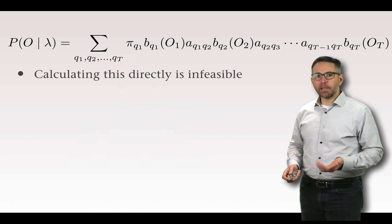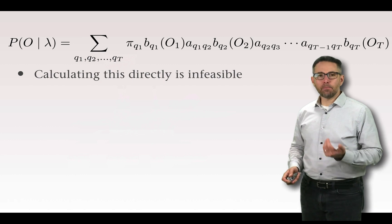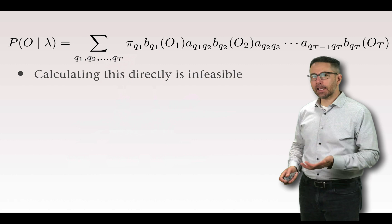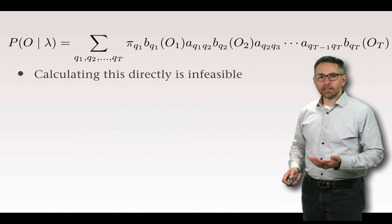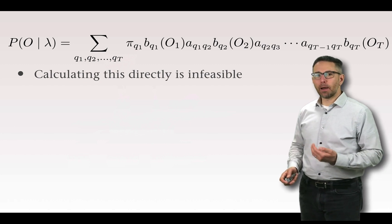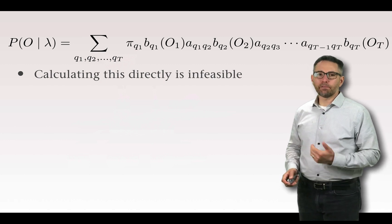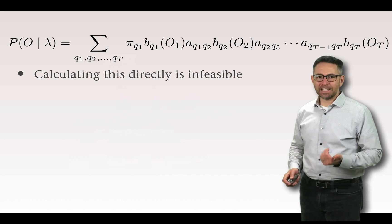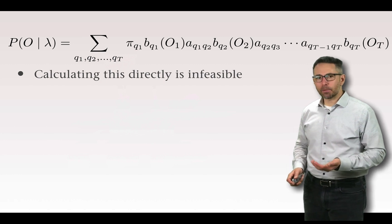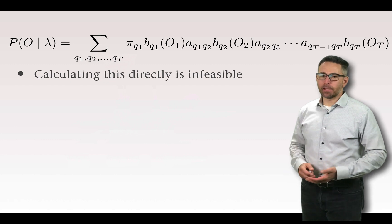The parameters include b(q1, o1) — the probability of observing symbol o1 when in state q1; a(q1, q2) — the probability of moving from state q1 to state q2; and b(q2, o_q2) — the probability of seeing the second observation in the second state. This continues as an alternating product of transition probabilities and observation probabilities, ending with the probability of moving from state Q_{T-1} to Q_T times the probability of observing symbol O_T in state Q_T. That was infeasible because of the enormous number of possible state sequences.